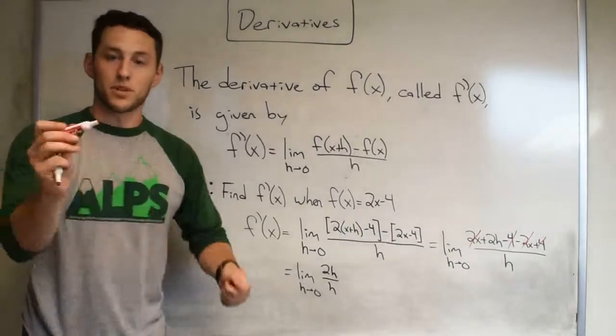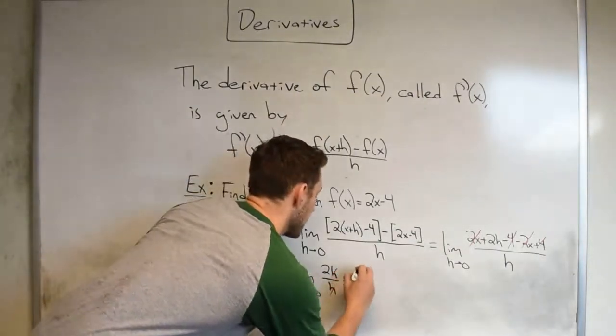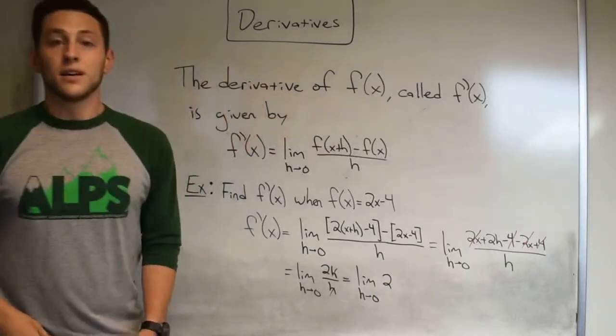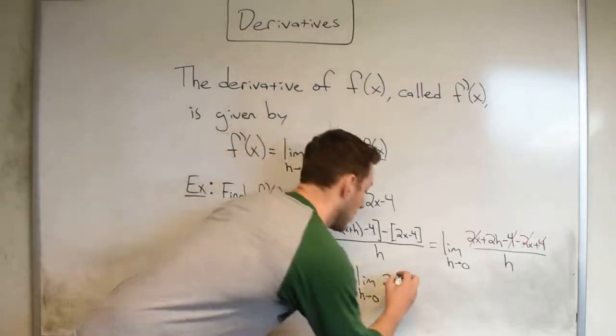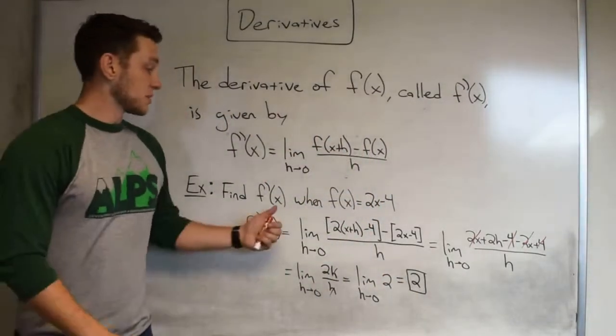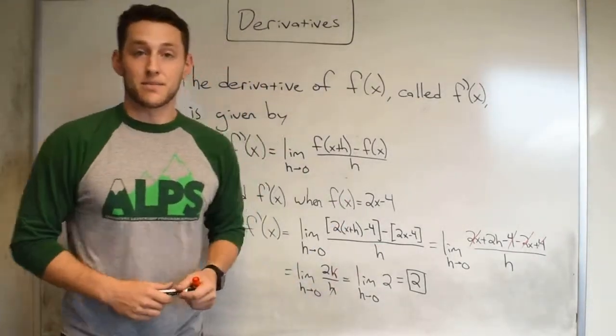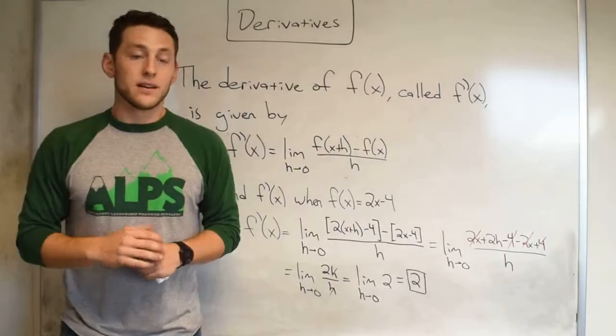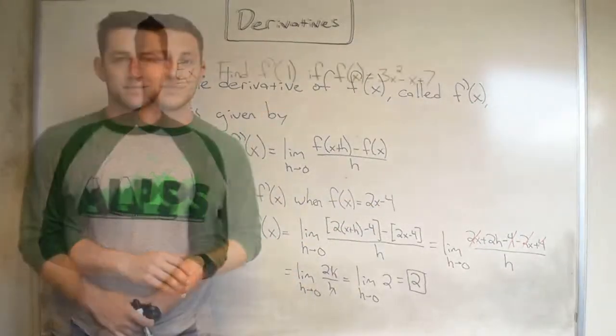So what we're left with is just the limit as h approaches zero of 2h divided by h. But hold up now, one more thing cancels. The h's even cancel. So in this case, this is just the limit as h approaches zero of 2, which hey, plug in zero wherever you see an h. Hint, there isn't any. So all we're left with for an answer is 2. This tells me that the derivative of the function 2x minus 4 is just 2. It also tells me that for no matter what x, the instantaneous rate of change is always going to be 2, which makes sense because 2x minus 4 is just a line with a positive slope of 2.